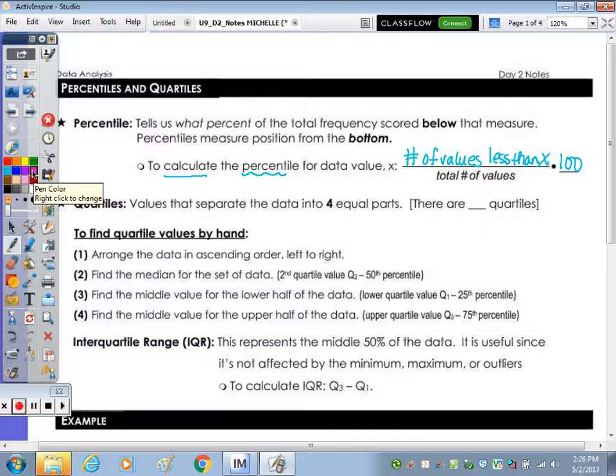Quartiles. Prefix quart means, like quarter, four. So values that separate the data into four equal parts. So if you picture me splitting this room up into four equal parts, all in a row, say horizontally, how many different separators would I have? Three. So we actually have three quartiles.